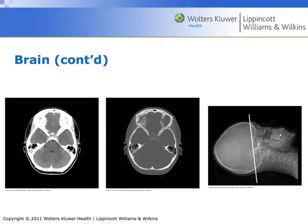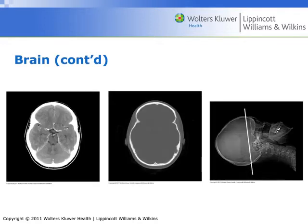Temporalis muscle on either side. This is the orbital roof of the frontal bone. Frontal bone. Falx cerebri. Falx cerebri. Anterior cerebral artery. Middle cerebral artery.